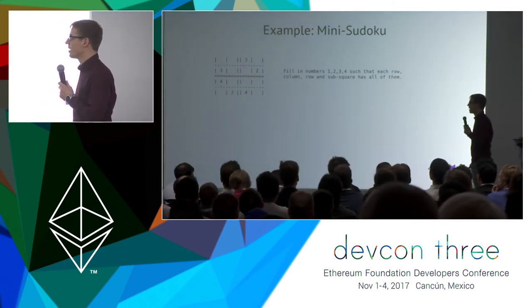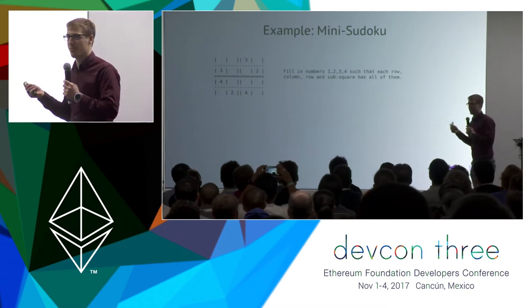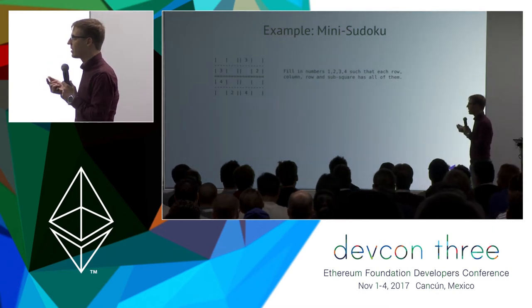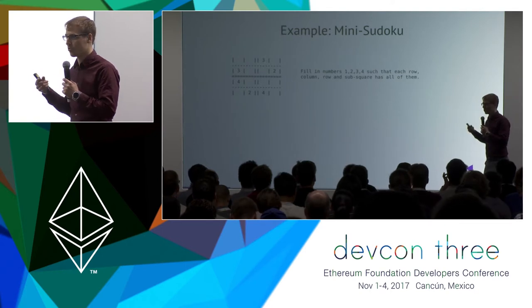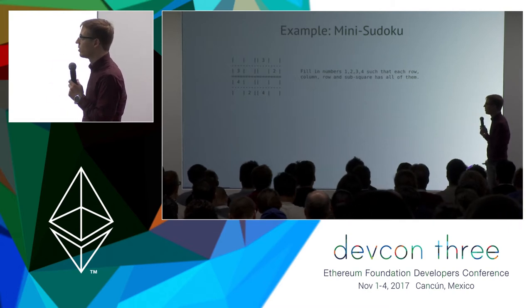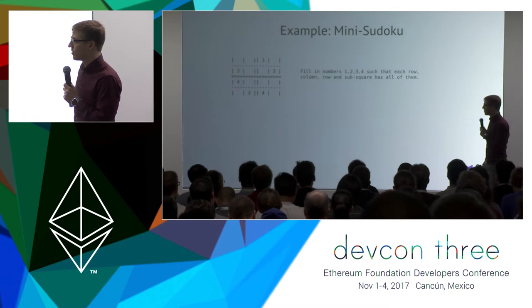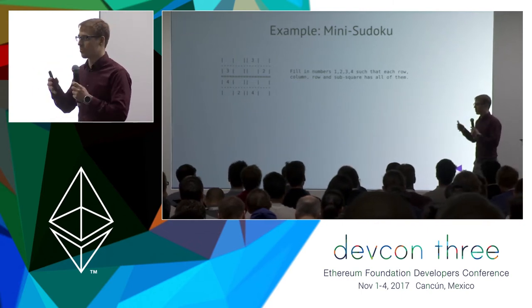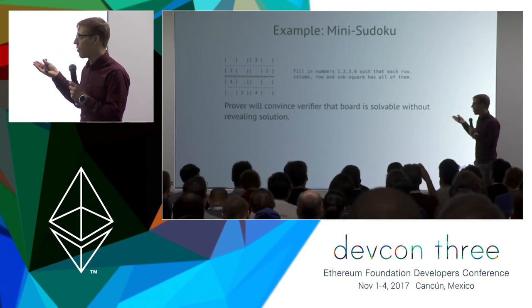You have a board with four-by-four cells. Some of these cells are prefilled with numbers between one and four. The task is to fill all the remaining cells so that each number between one and four appears exactly once in each row, exactly once in each column, and exactly once in each of the four two-by-two sub-squares. The prover wants to convince the verifier that the board is solvable without telling anything about how the solution looks.